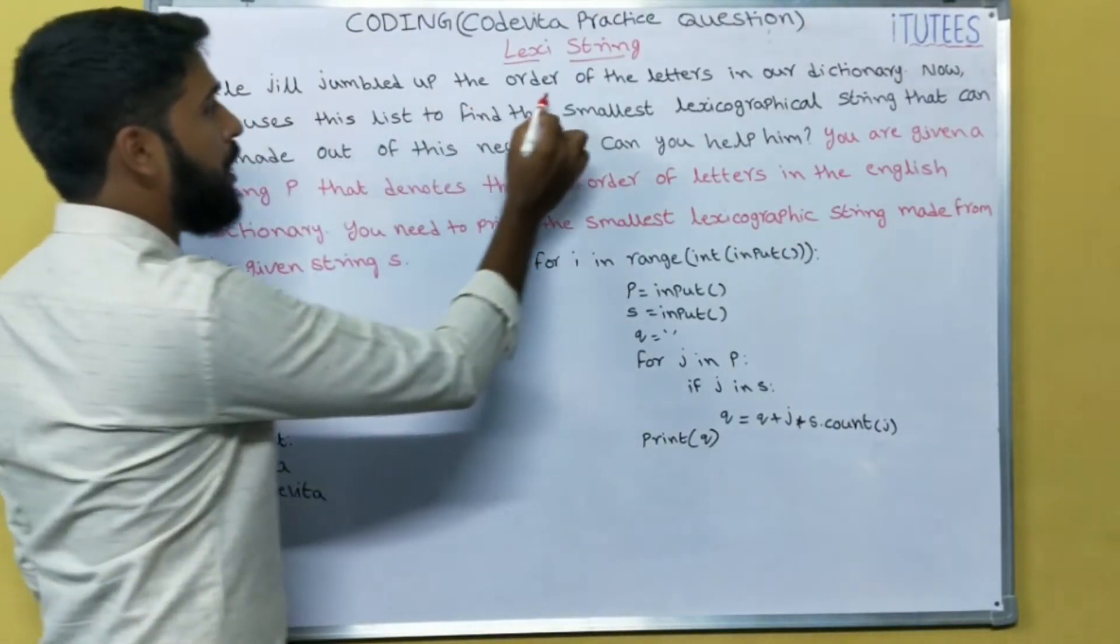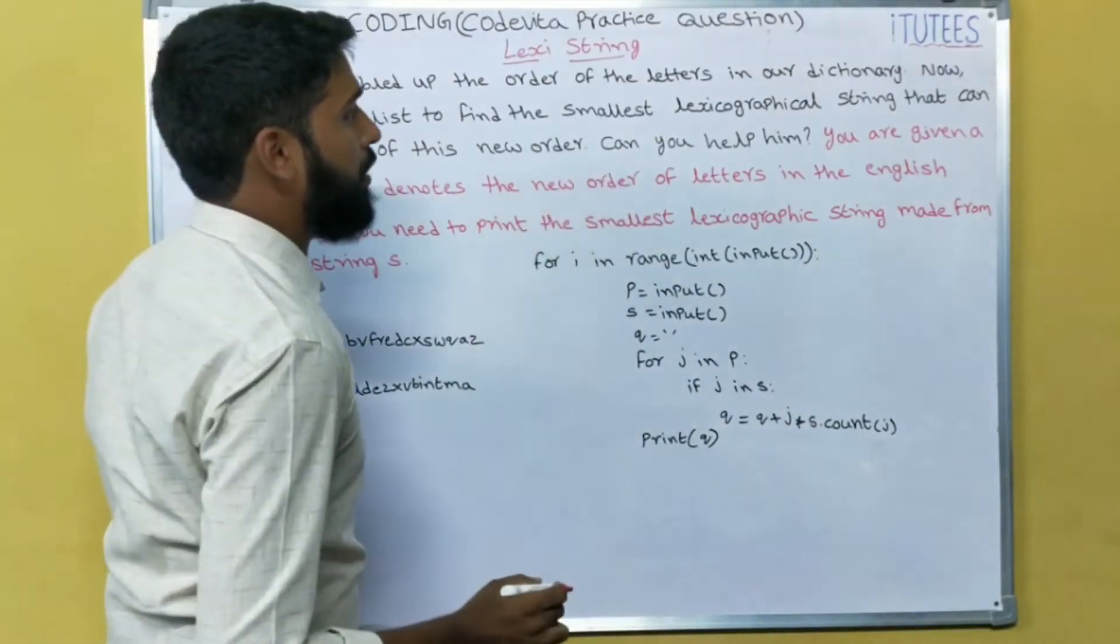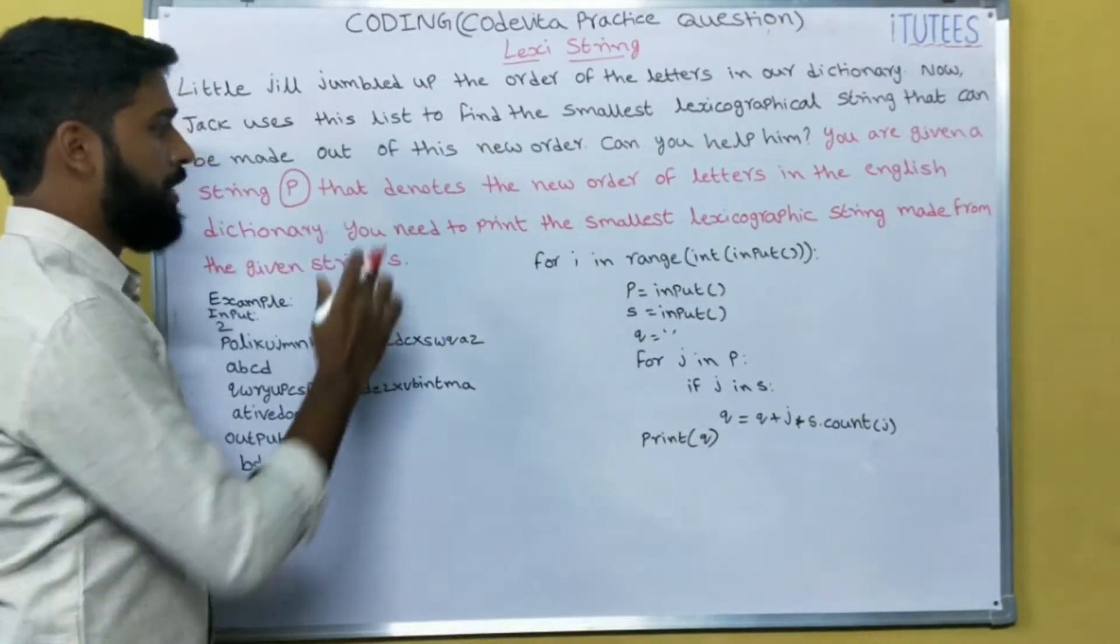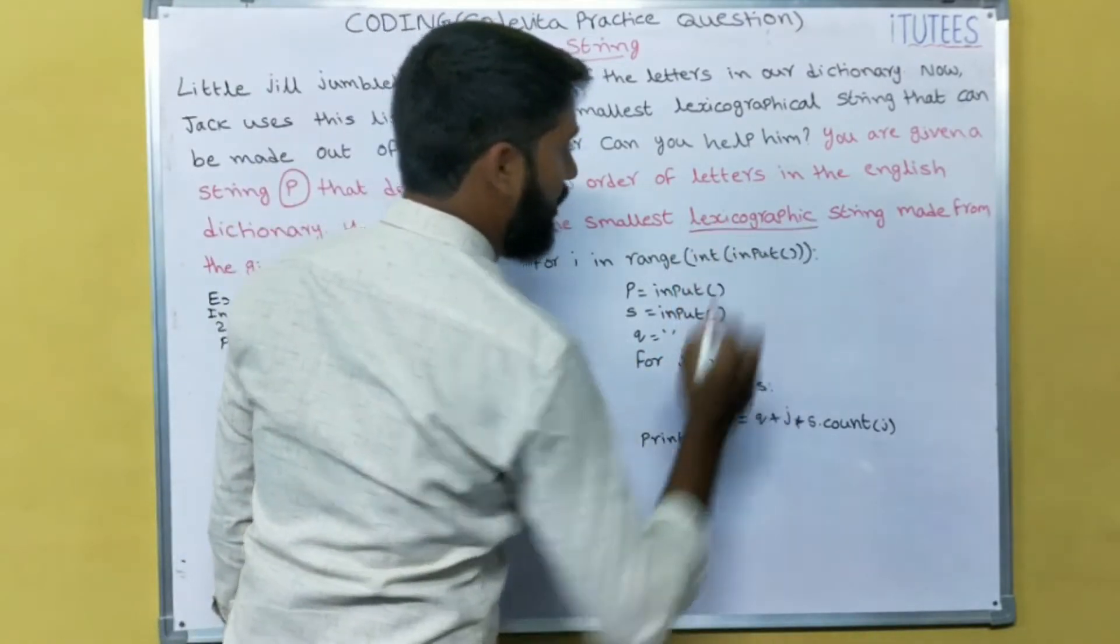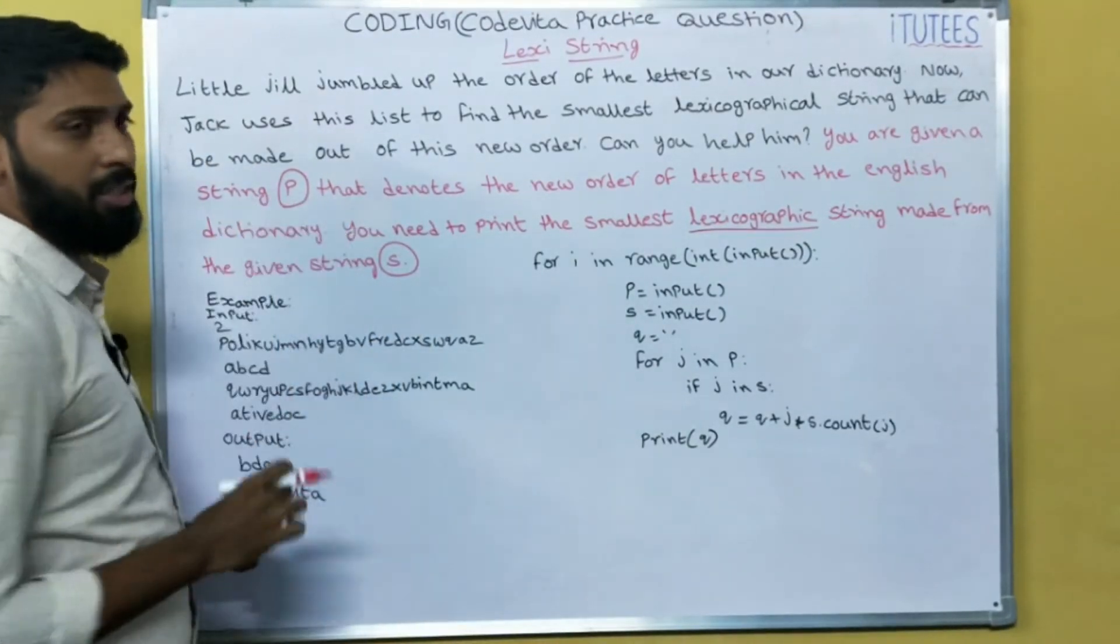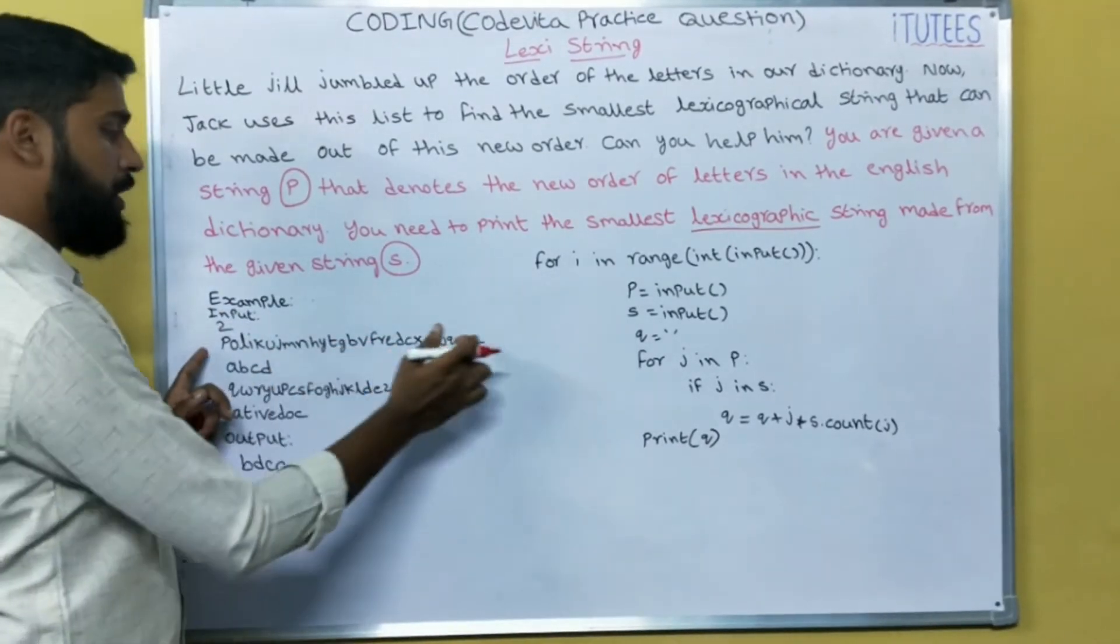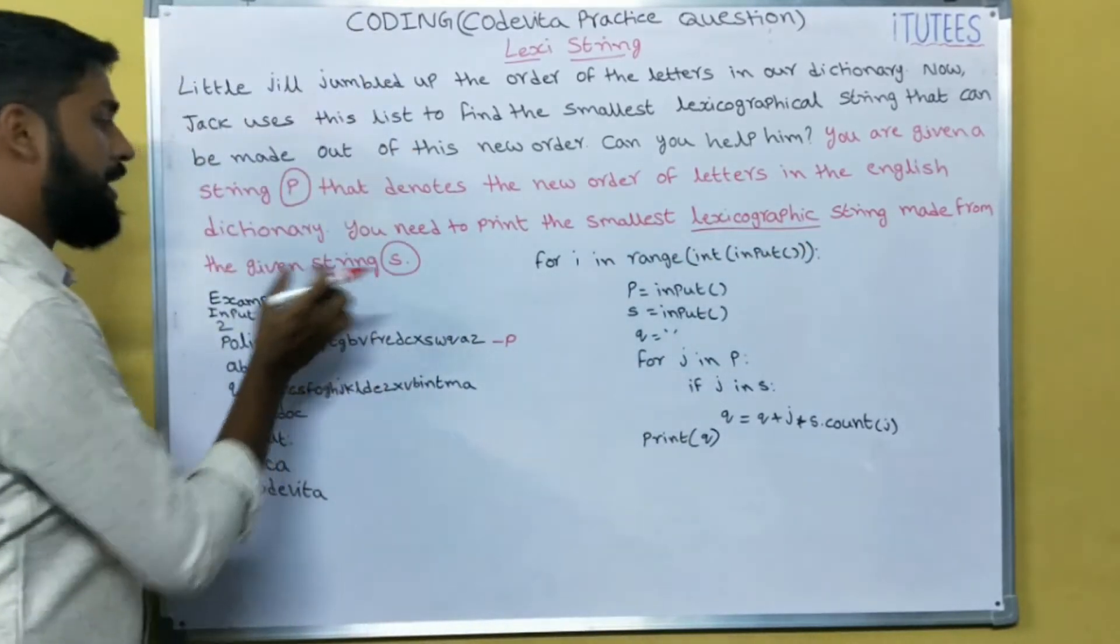Little Jill jumbled up the order of the letters in our dictionary. Now Jock uses this list to find the smallest lexicographical string that can be made out of this new order. Can you help him? You are given a string P that denotes the new order of letters in the English dictionary. You need to print the smallest lexicographic string made from the given string.